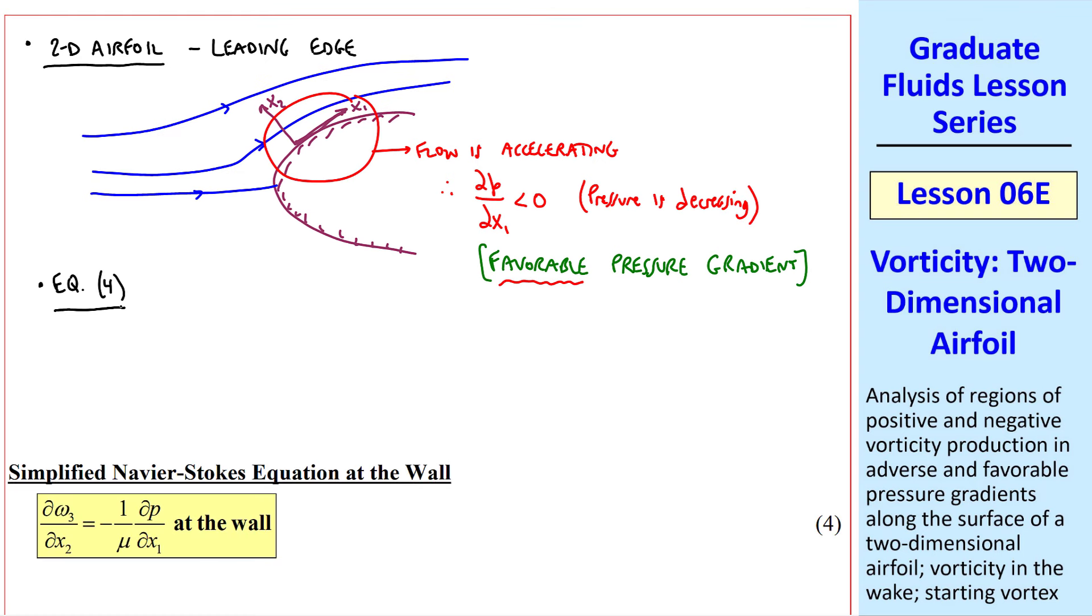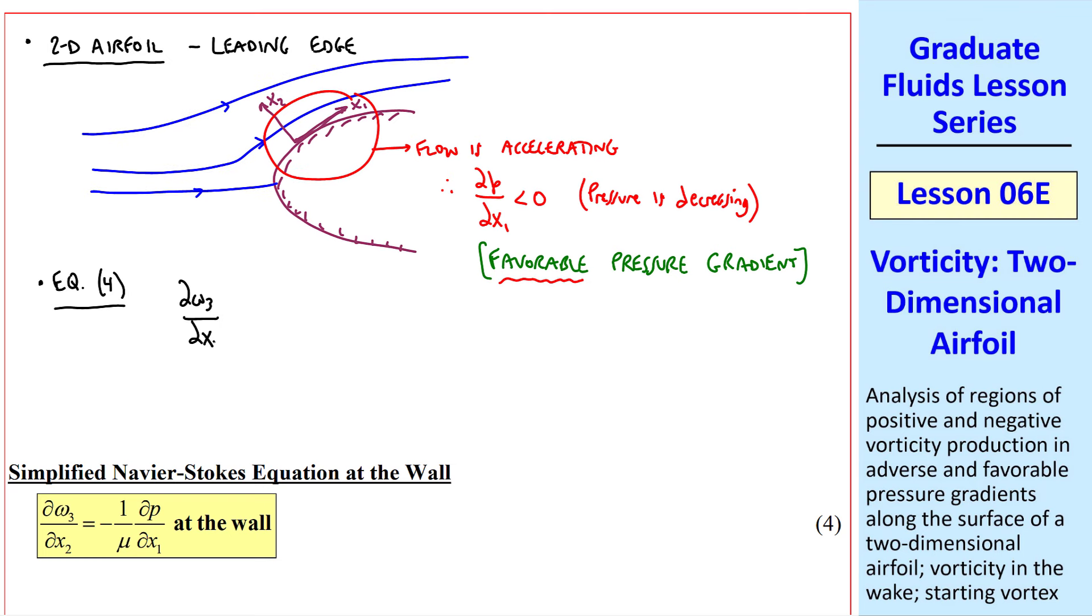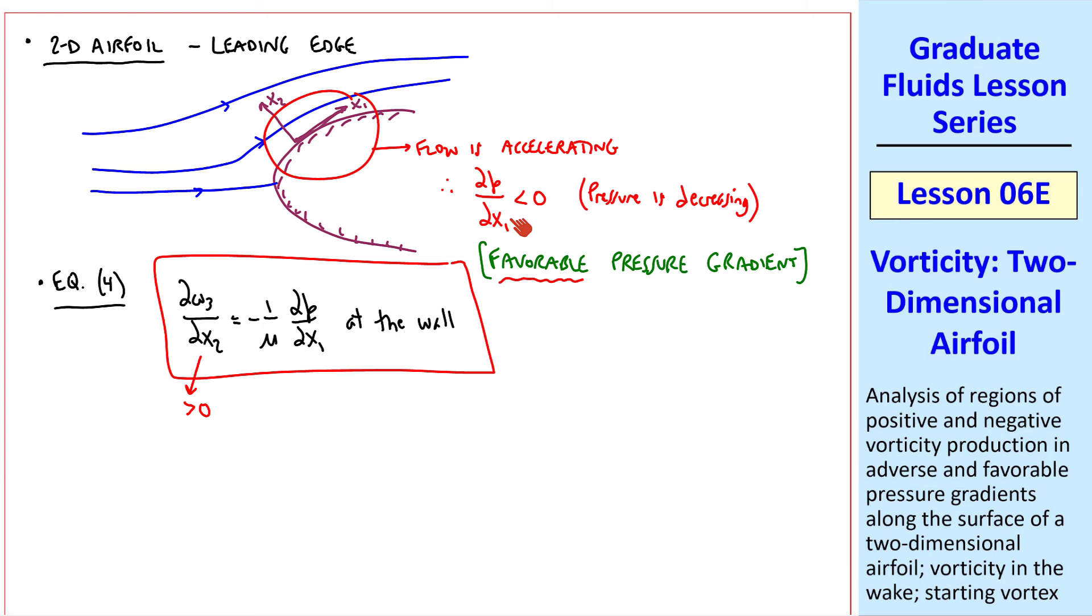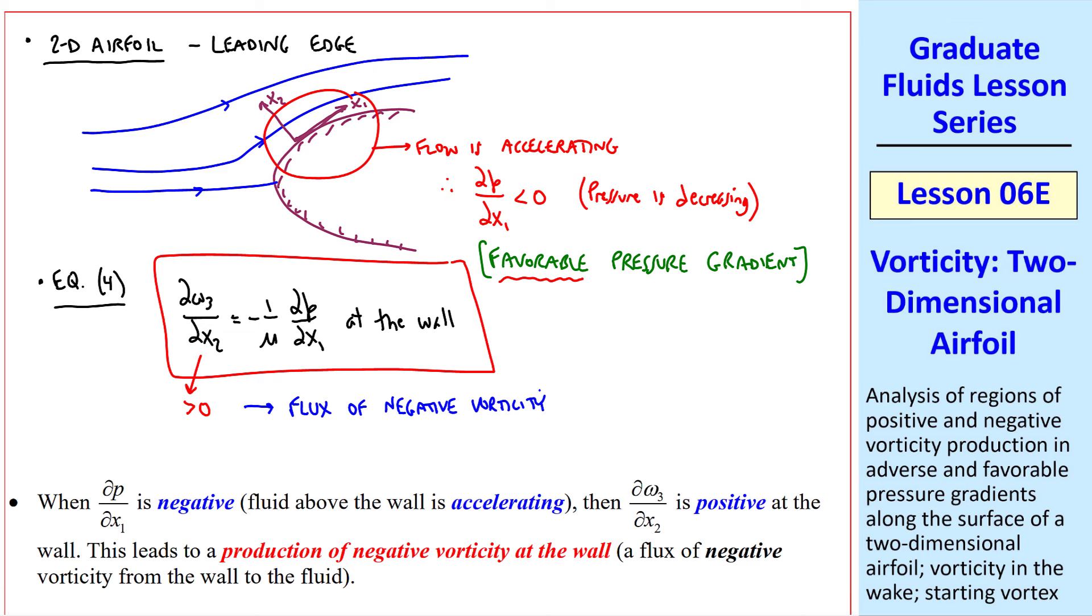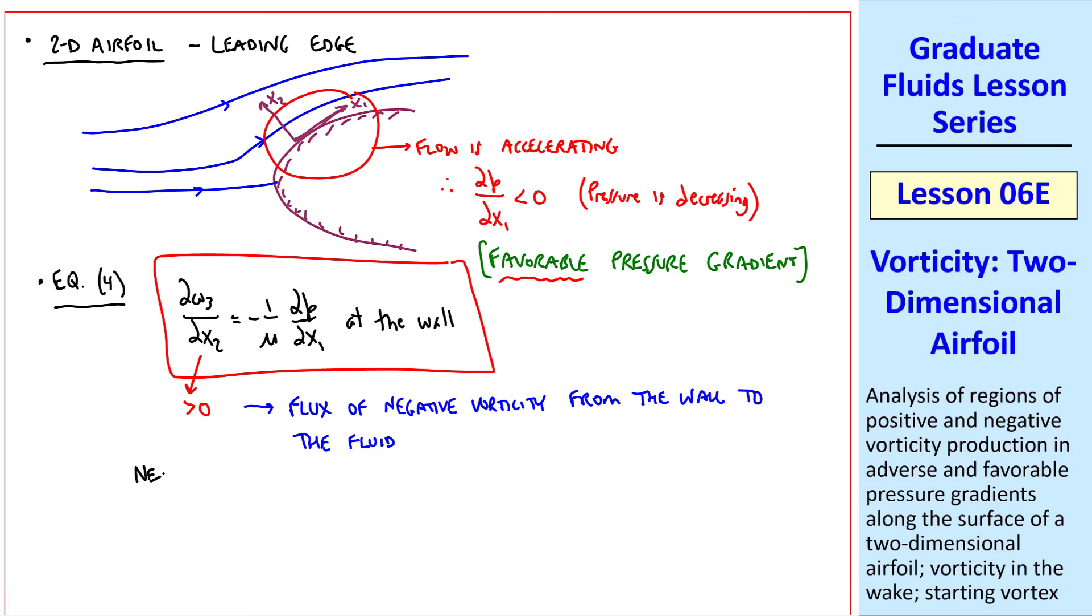According to equation 4 from above, which I write out here, ∂ω3/∂X2 is positive when ∂P/∂X1 is negative. This leads to a flux of negative vorticity from the wall to the fluid. In other words, negative vorticity is being produced at the wall in this region of accelerating flow.